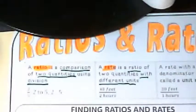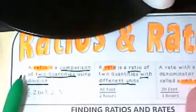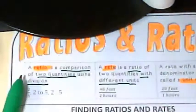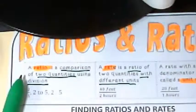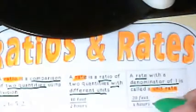And a rate with a denominator of one is called a unit rate. So denominator of one is the important part here. If we can get this down to twenty feet in one hour, we know that is the unit rate for that distance and that time.